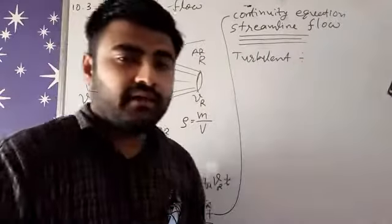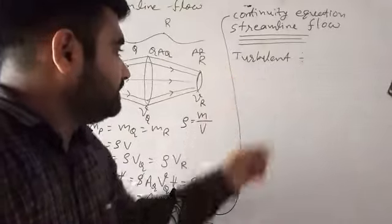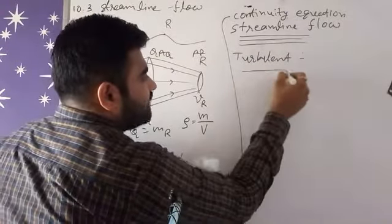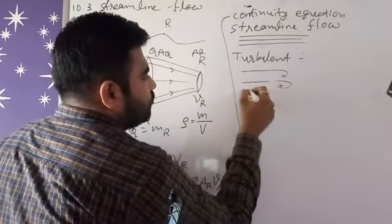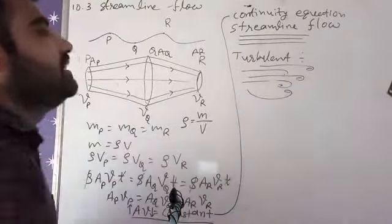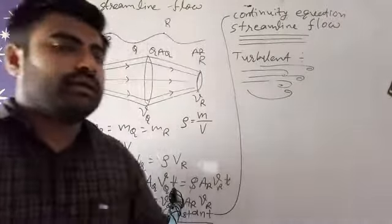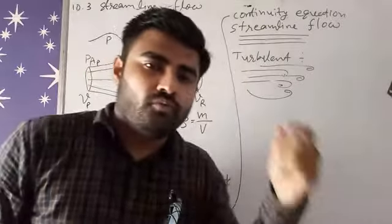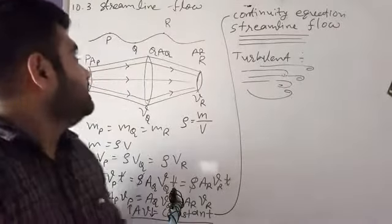But if the flow is at the highest speed, then water will come out rotating like this. So then we won't get the water flow in a straight line. When water goes at high speed, we call it turbulent flow.